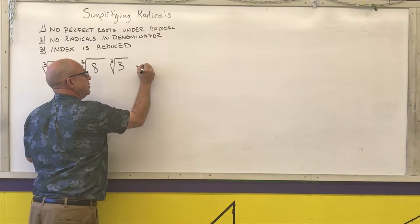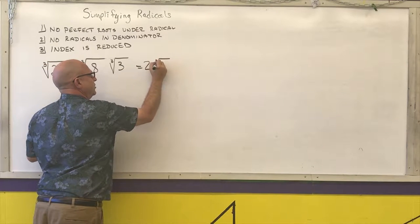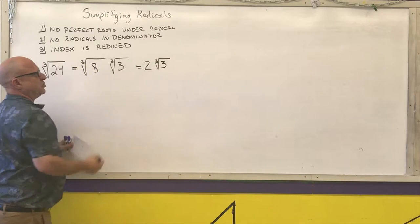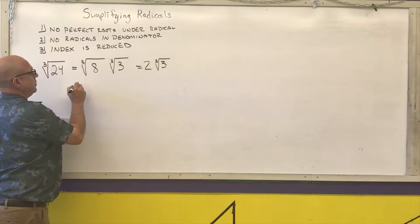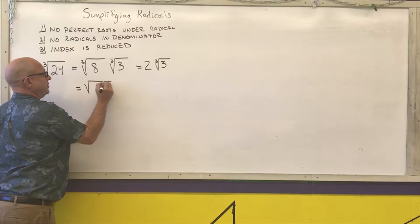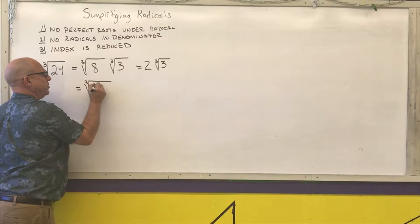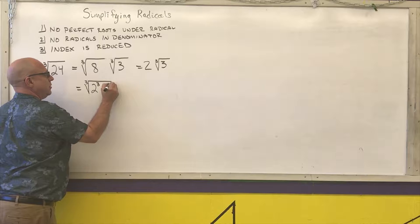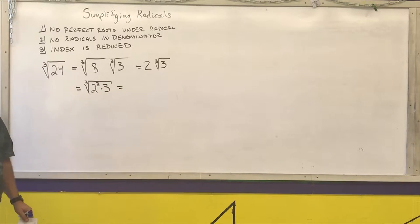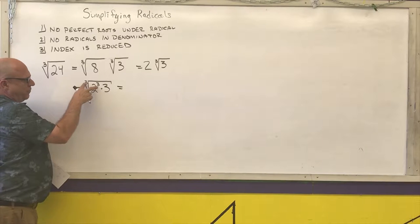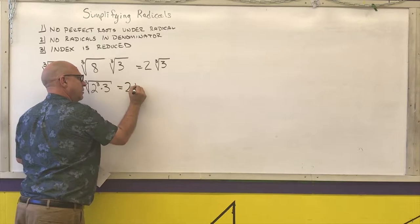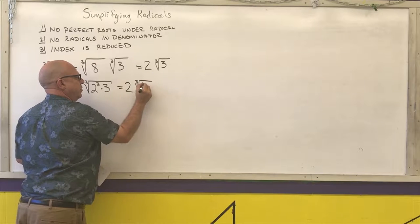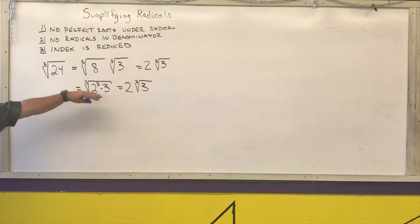The cube root of 8 is 2, and the cube root of 3 is just the cube root of 3, because 3 is prime — I can't pull out a perfect cube. Another way this could have been done is writing the complete prime factorization: 24 is 2 cubed times 3. When using radicals to pull things out, you want to pull full groups of whatever the index is. I have one group of three 2s, so that 2 comes out, and the 3 is left over.